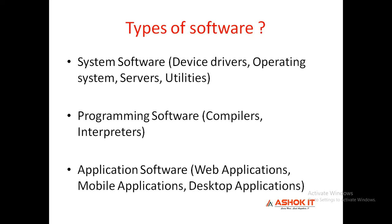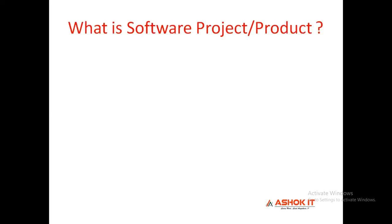So application software means web applications, mobile applications, and desktop applications. Any kind of application software will be compiled using programming software, and that programming software will run on system software platforms like servers or device drivers. These are the three types of software: system software, programming software, and application software.